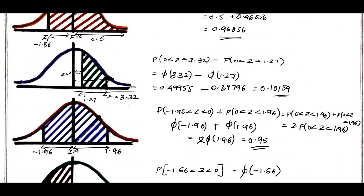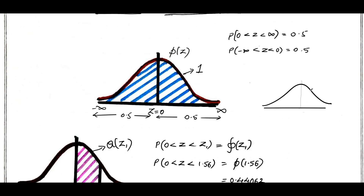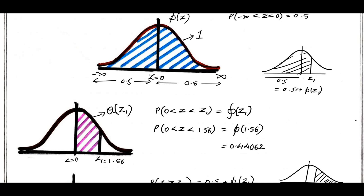Similarly, we can have one more shortcut formula. To find the area for z less than or equal to z1 — this portion — the standard formula is 0.5 plus phi of z1. To find this in the calculator, we can make use of P of z1. For example, consider the value 1.81 — I need to find 0.5 plus phi of 1.81. Using Q of 1.81, I got 0.46485.